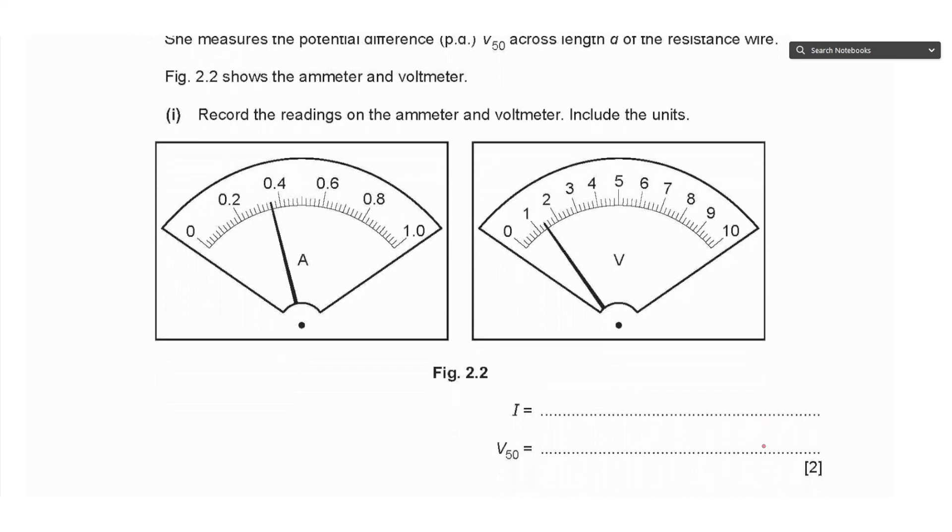Figure 2.2 shows the ammeter and voltmeter readings. Record the readings, include the units. For the ammeter we have 0.3 in the middle—these are 5 divisions, each division is 0.02—so 0.32, 0.34, 0.36. That's 0.36 amperes. For the voltmeter we have 5 divisions between 1 and 2, each division is 0.2, so 1.2, 1.4. The unit here is volts.